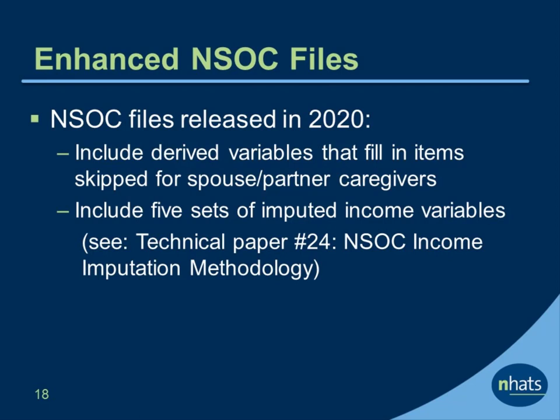Enhanced data files were released in 2020 that include newly generated derived variables filling in the skipped information for these caregivers. Details are available in the NSOC user guide. The files also include five sets of imputed income variables described in NHATS technical paper number 24.